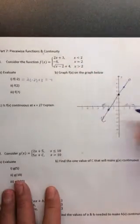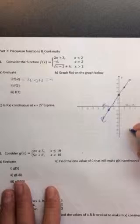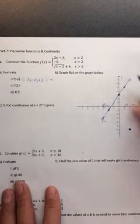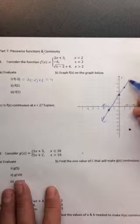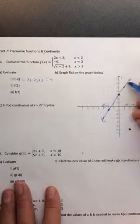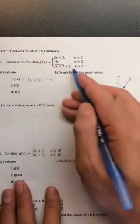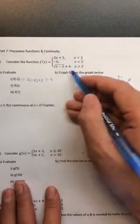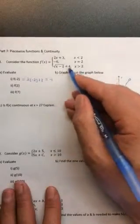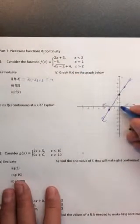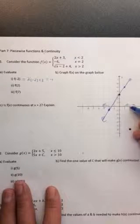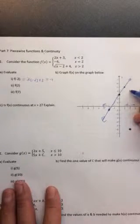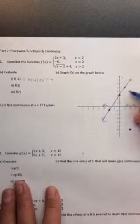And instead, at x equals 2, the y value is negative 6. Notice that we use a blank circle here because this was not a point on this line segment. And then when x is greater than 2, we get a square root graph that shifted 2 to the right and 4 up. So square root graphs start at 0, 0. It shifted 2 to the right and 4 up, which is nice because that's where this function starts. This is a blank circle.